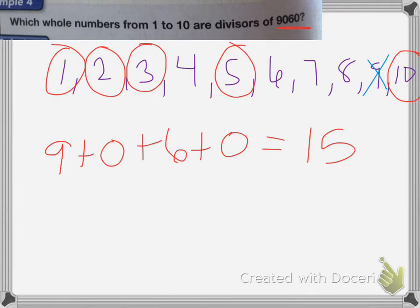We want to check 6, and remember for a number to be divisible by 6, it has to be divisible by both 2 and 3, which it is. So it can be divided by 6.